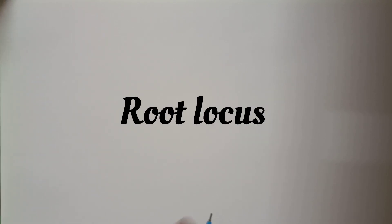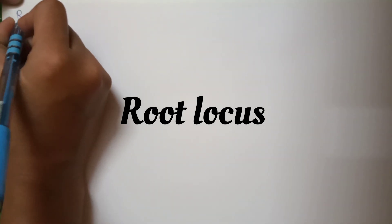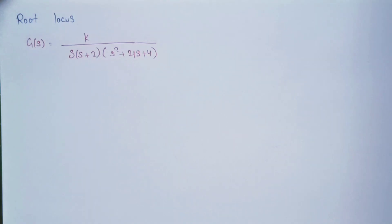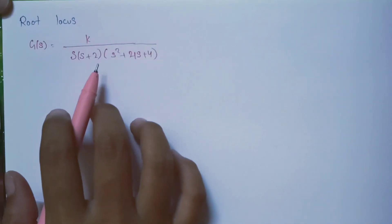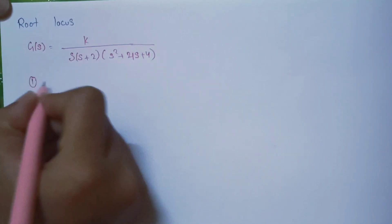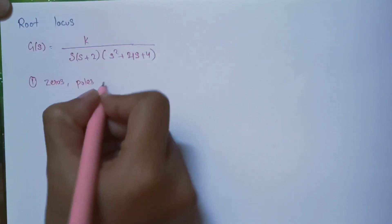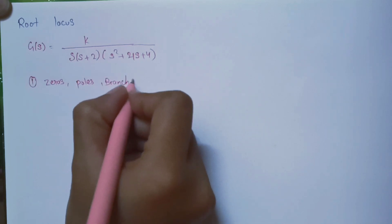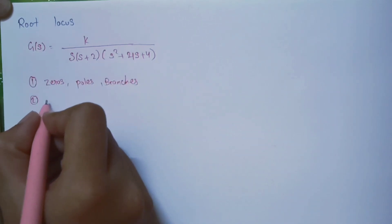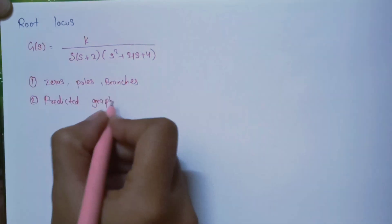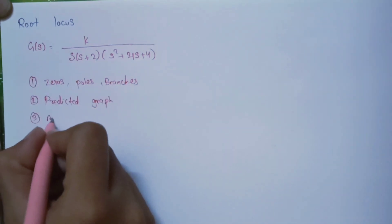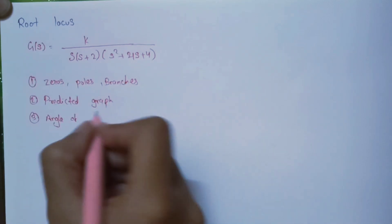Welcome back to the channel. In this video I'm going to solve root locus problems and based on this concept we will solve some questions. Let's get started. We will solve it in steps. The first step is to calculate zeros, poles, and the number of branches in this system. The second step is to draw the predicted graph, then we will calculate the angle of asymptotes and centroid of the system.